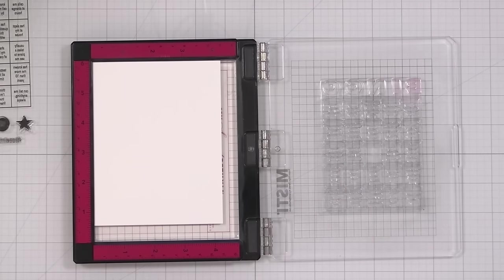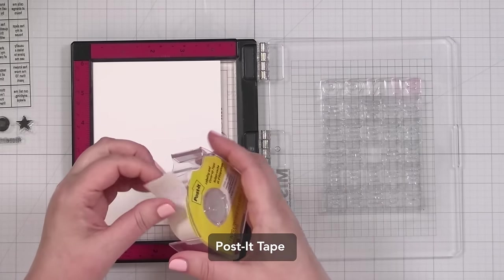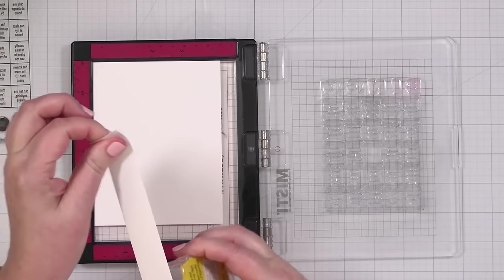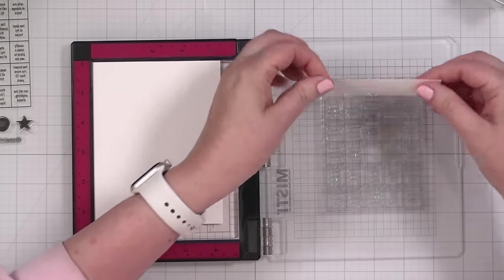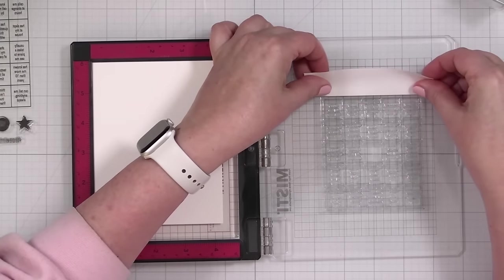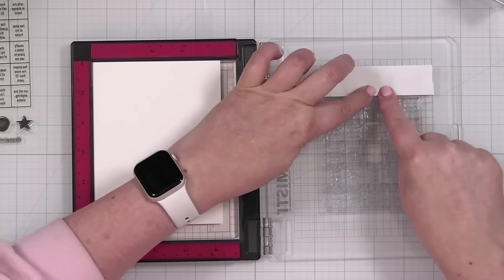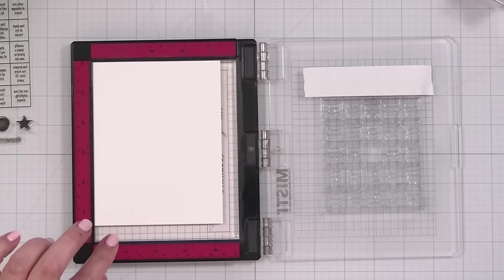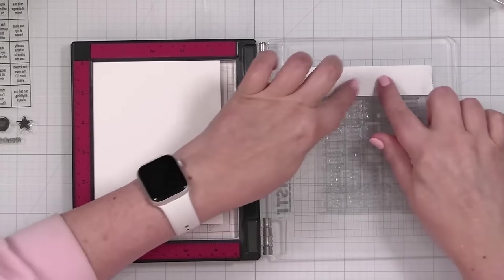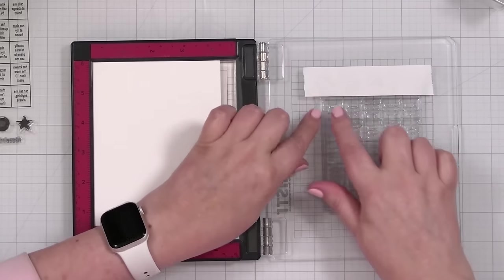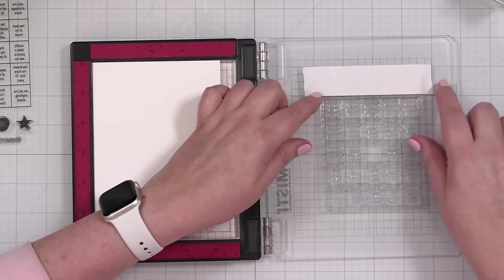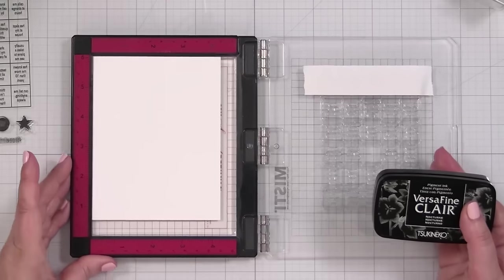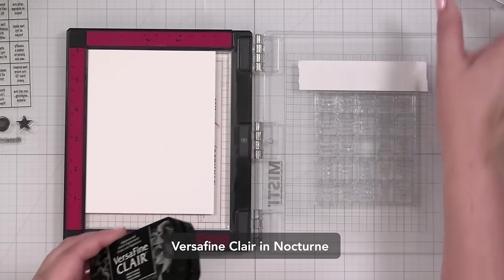And I'm going to take some post-it tape because I want to mask off the bingo area. I do not want my ink to get on here. So I'm going to go like that. It's going to get very inky. So I think I'm going to grab my tweezers too just in case. I don't want to get my hands all inky, but I want to make sure that I get the full frame.